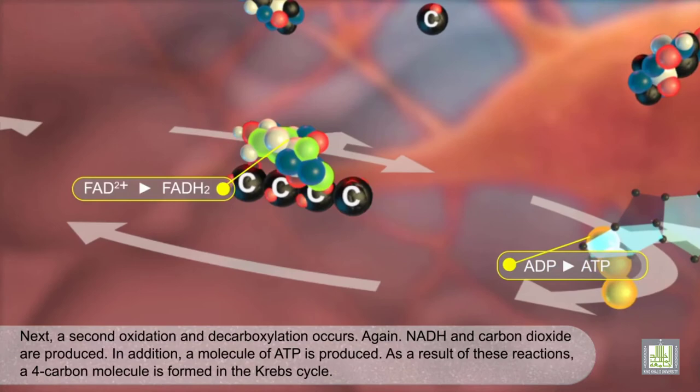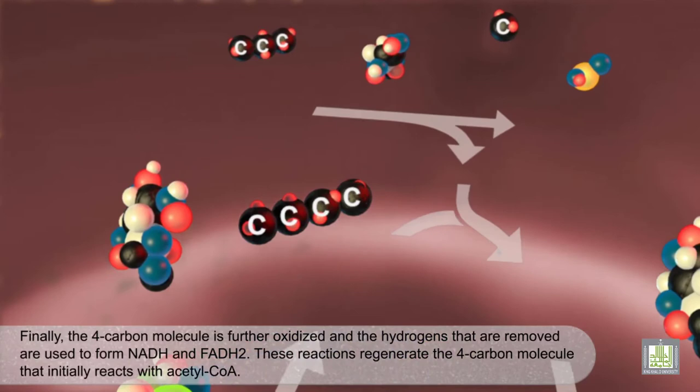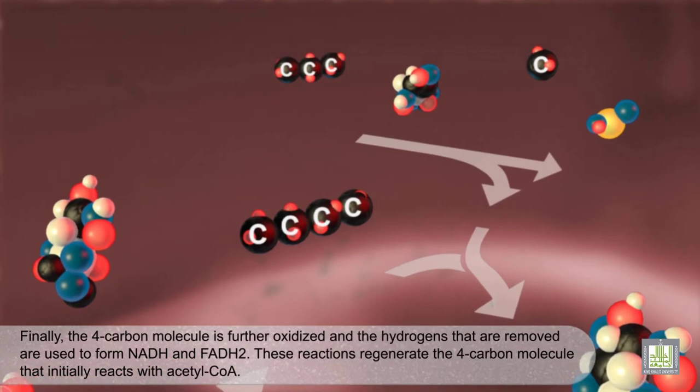As a result of these reactions, a four-carbon molecule is formed in the Krebs cycle. Finally, the four-carbon molecule is further oxidized, and the hydrogens that are removed are used to form NADH and FADH2. These reactions regenerate the four-carbon molecule that initially reacts with acetyl-CoA.